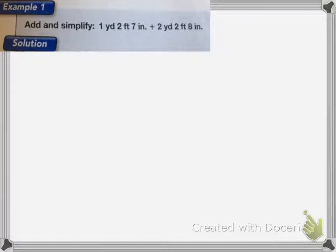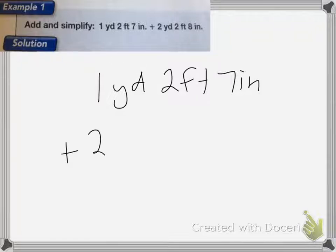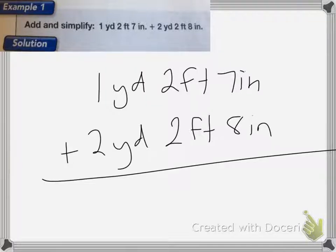So here I have 1 yard, 2 feet, 7 inches, and I want to add 2 yards, 2 feet, and 8 inches. So first thing I'm going to do is go ahead and line them up. 1 yard, 2 feet, 7 inches, plus 2 yards, 2 feet, and 8 inches. I'm going to start with my smallest measure.